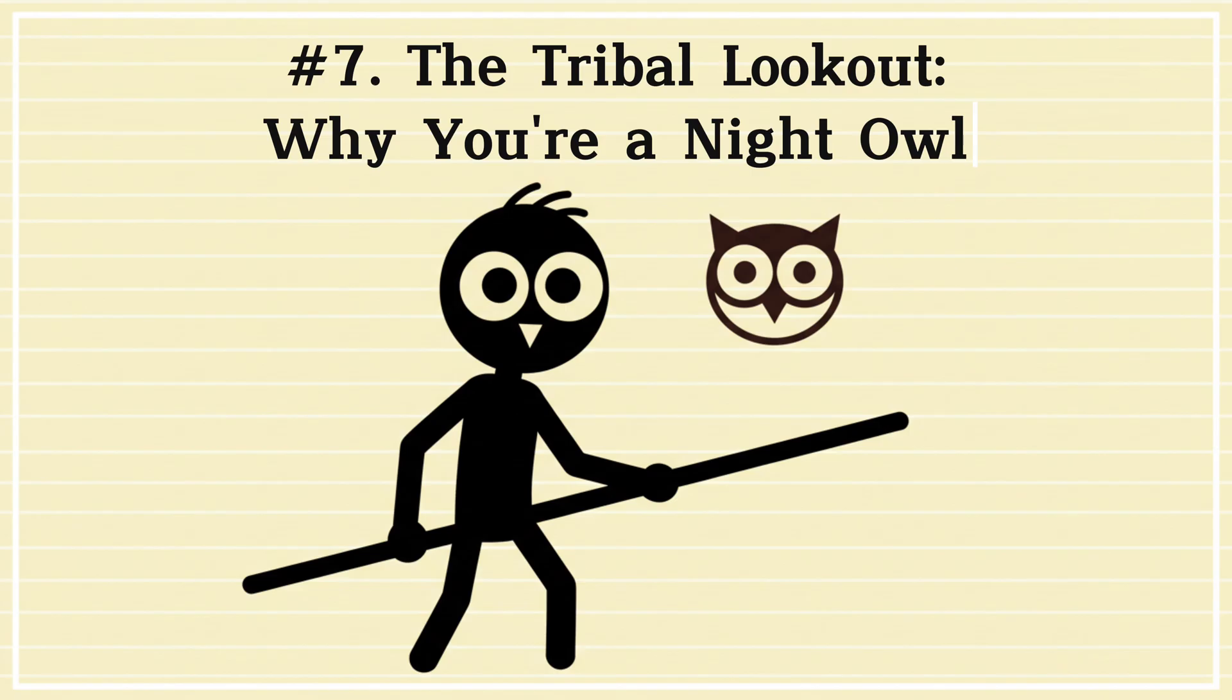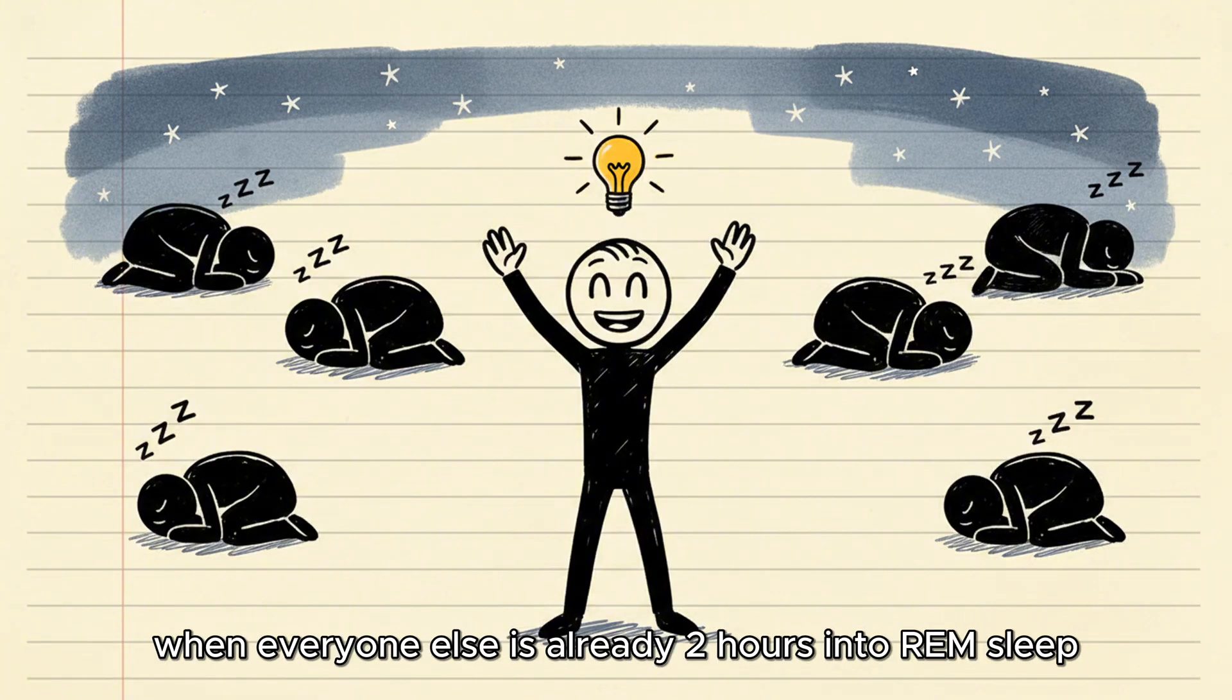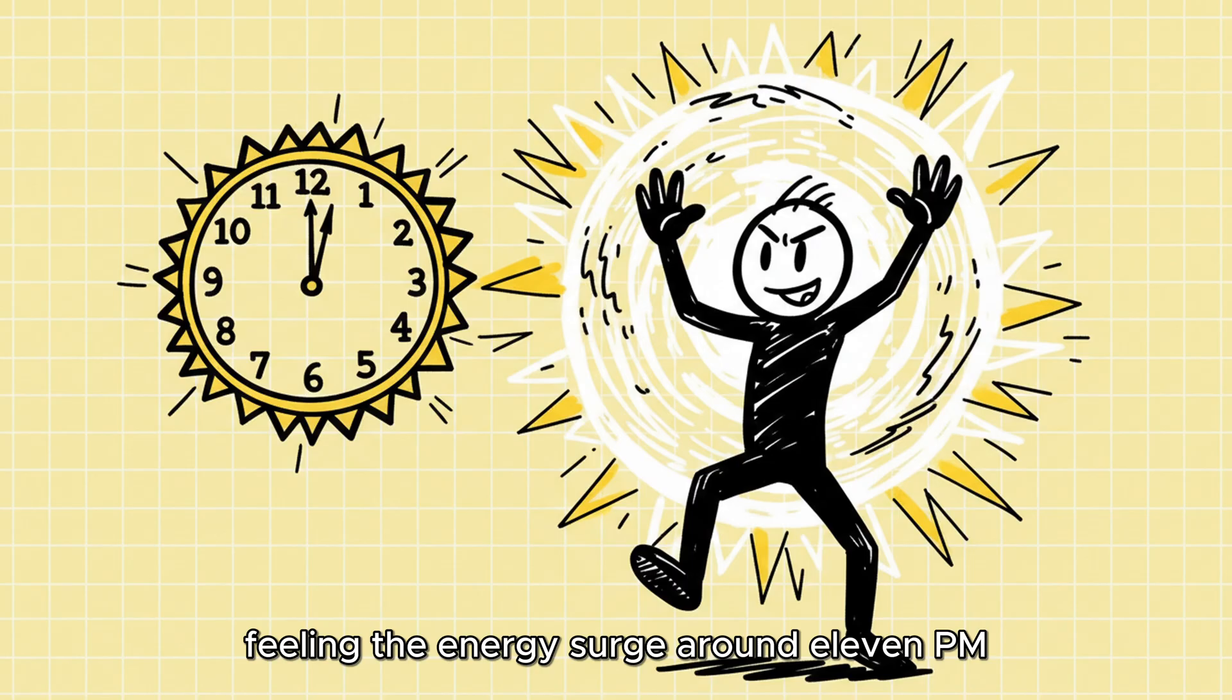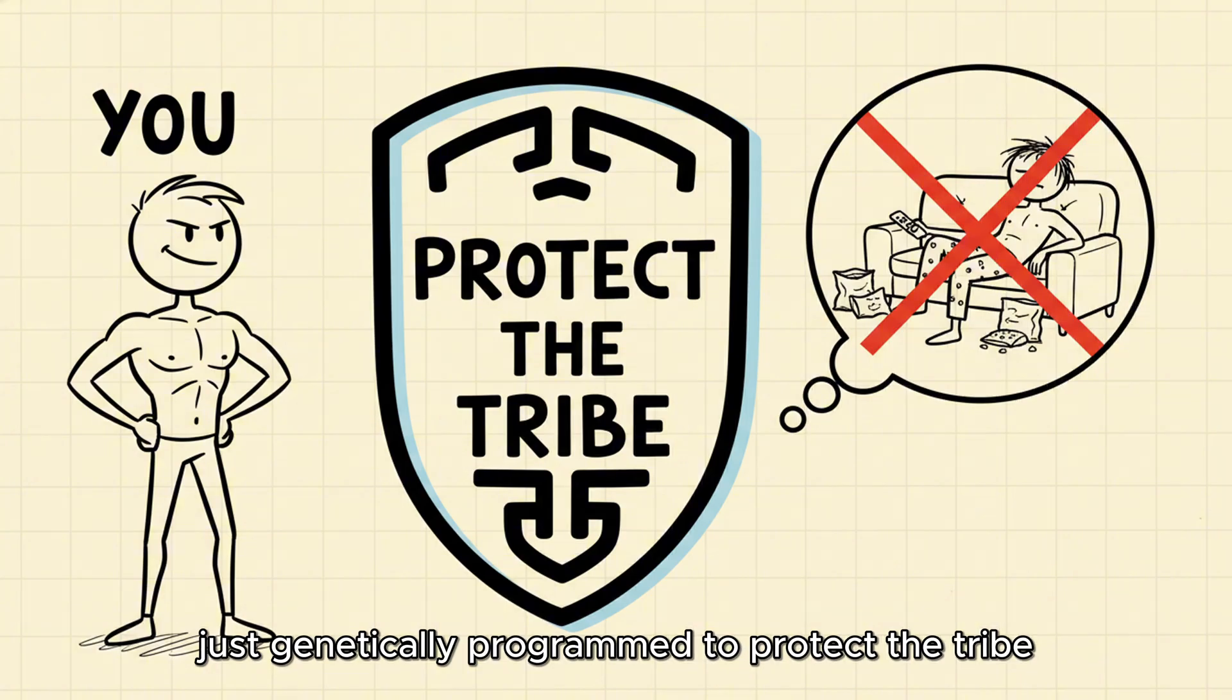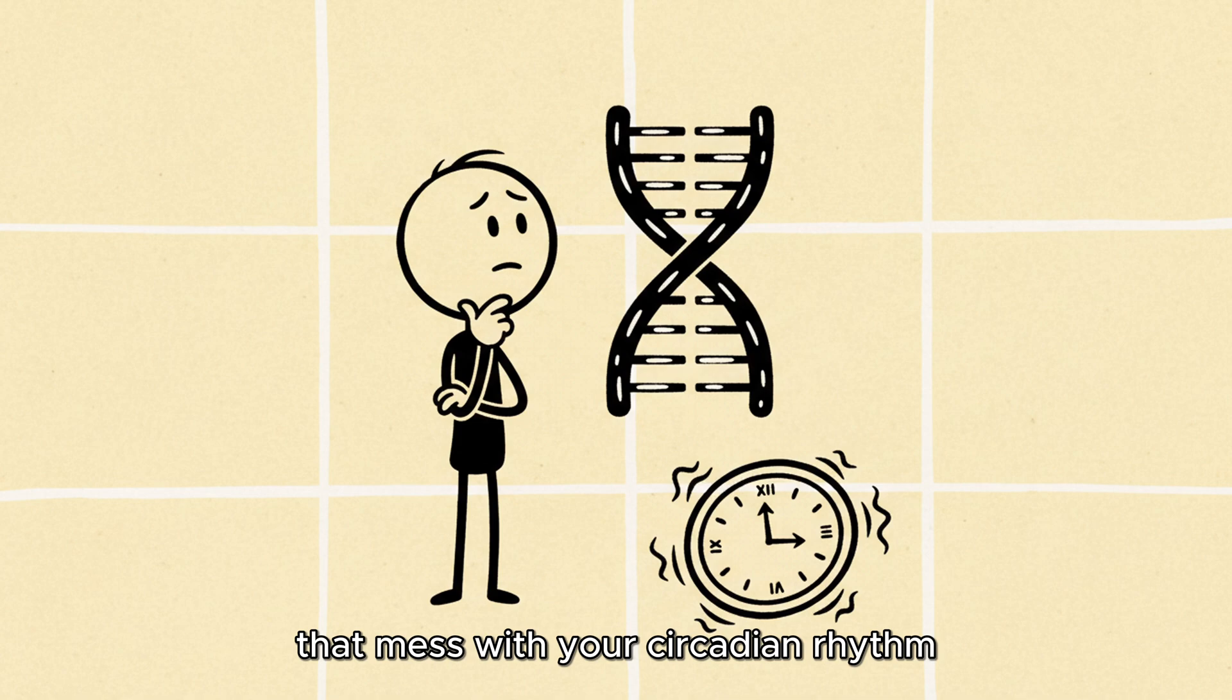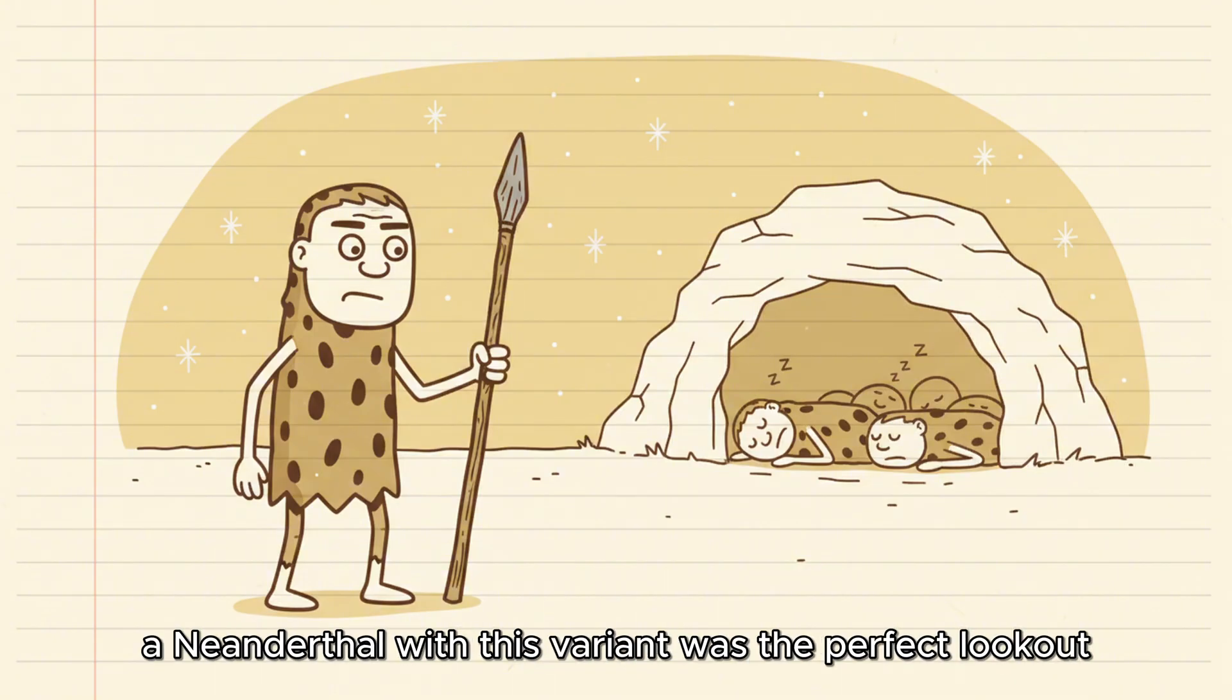Number seven, the tribal lookout. Why you're a night owl. Do you consistently feel most awake and creative when everyone else is already two hours into REM sleep? Are you a night shifter by choice, feeling the energy surge around 11 p.m.? Guess what? You are not undisciplined. You are just genetically programmed to protect the tribe. This trait is tied to specific gene variants that mess with your circadian rhythm, shifting your internal clock later. While the rest of the group slept through the night, a Neanderthal with this variant was the perfect lookout.